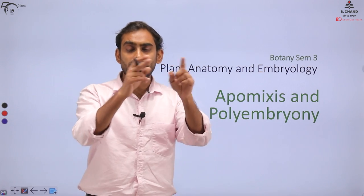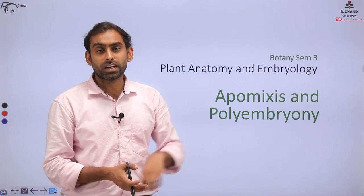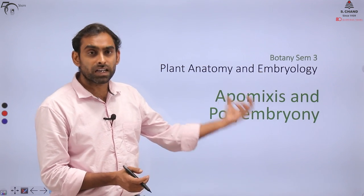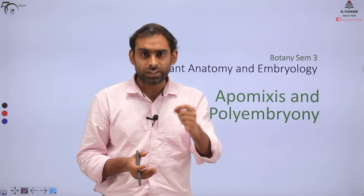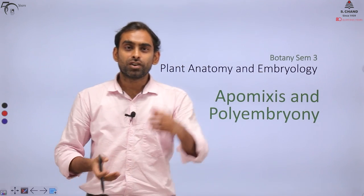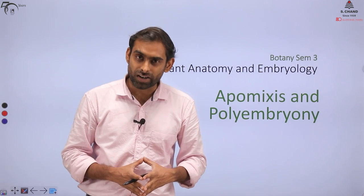Polyembryony means that usually within one embryo sac you should have only one embryo. But if in one embryo sac you have more than one embryo, that is called Polyembryony. You have also seen this in animals and humans — twins are formed. That is also an example of Polyembryony. So in plants we also have twins or multiples, which we call polyembryony.